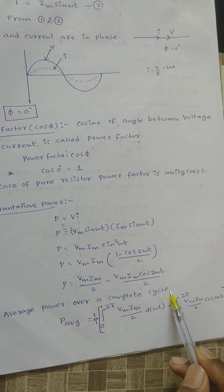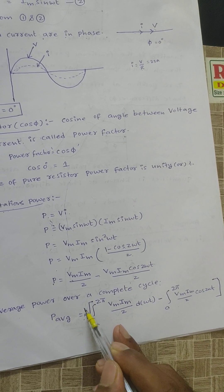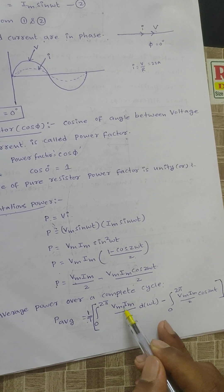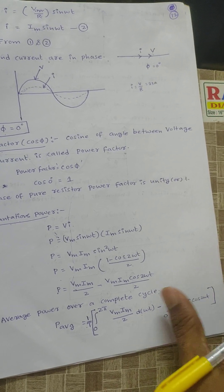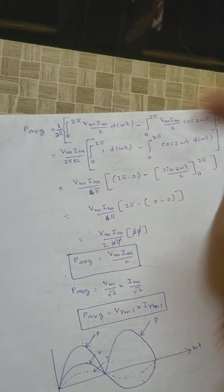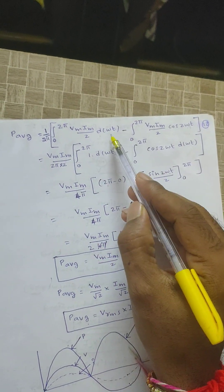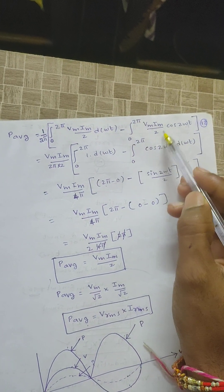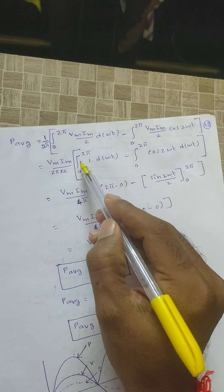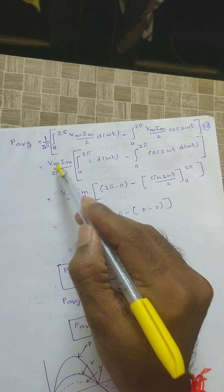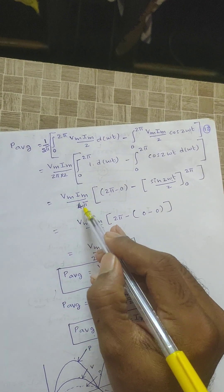Average power over a complete cycle: one cycle has a time period of 2π. P_average equals (1/2π) times the integral from 0 to 2π of (Vm × Im / 2) d(ωt), minus the integral from 0 to 2π of (Vm × Im / 2) × cos(2ωt) d(ωt). Taking Vm × Im outside, P_average equals Vm × Im divided by 4π.